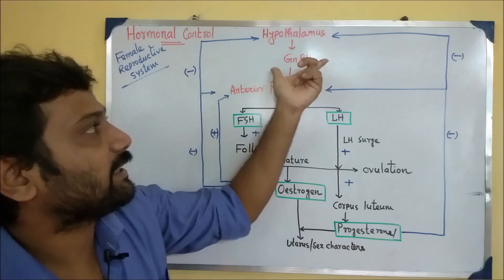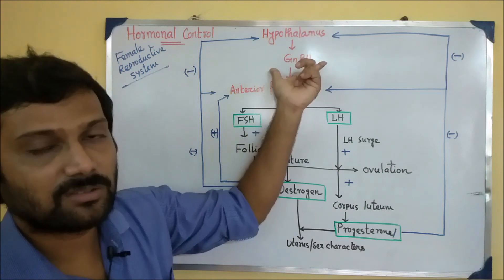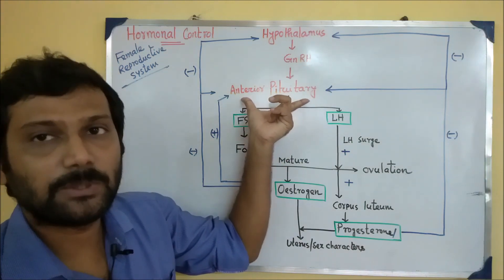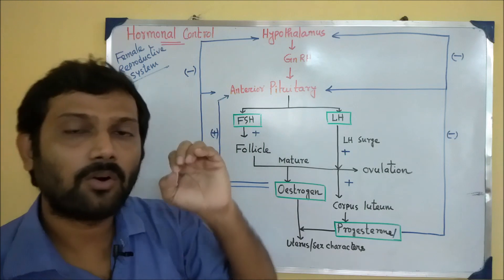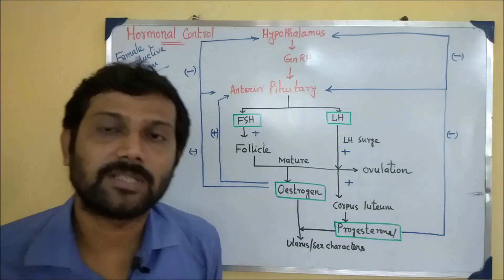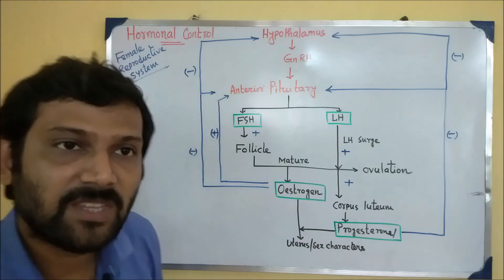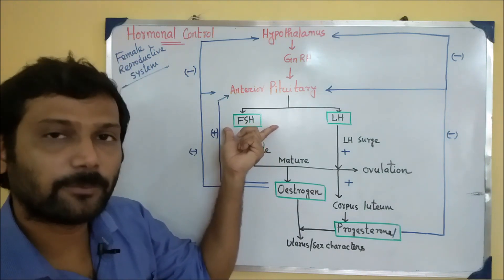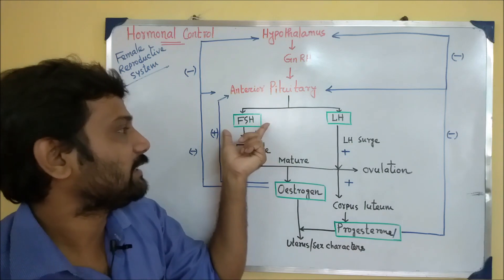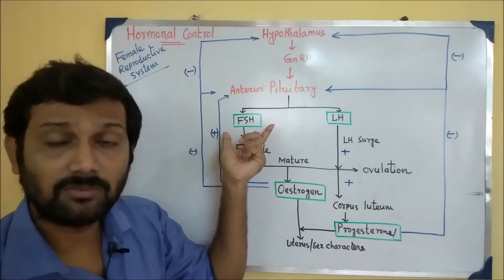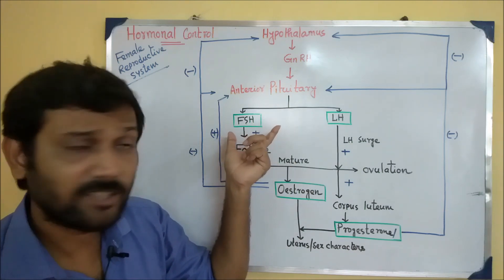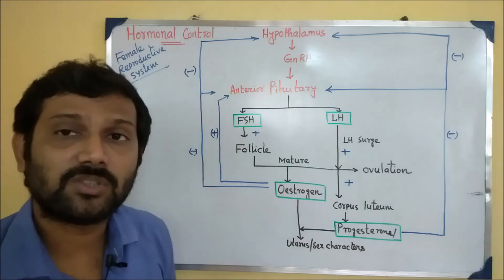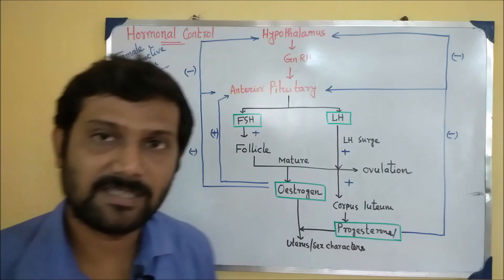GnRH acts on the anterior pituitary — meaning the agro pituitary. As a result, the anterior pituitary secretes FSH, the follicle stimulating hormone, and LH, the luteinizing hormone.